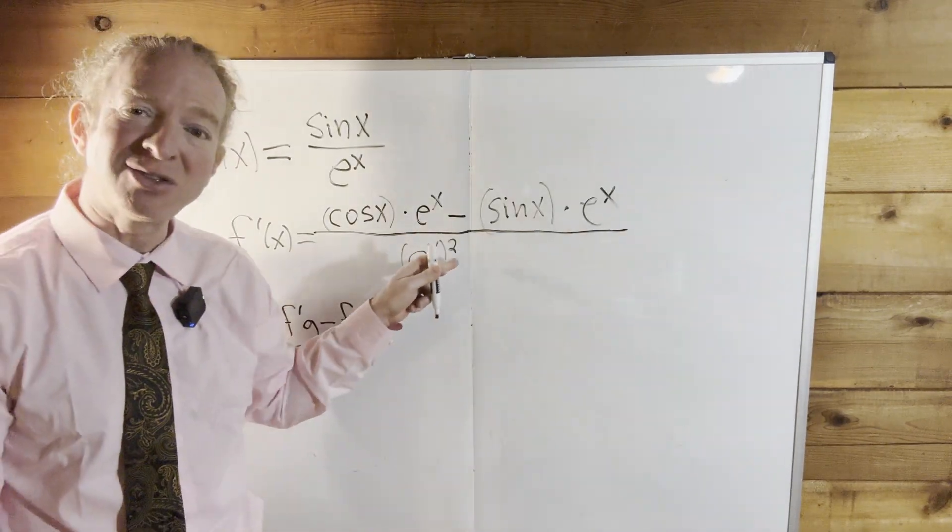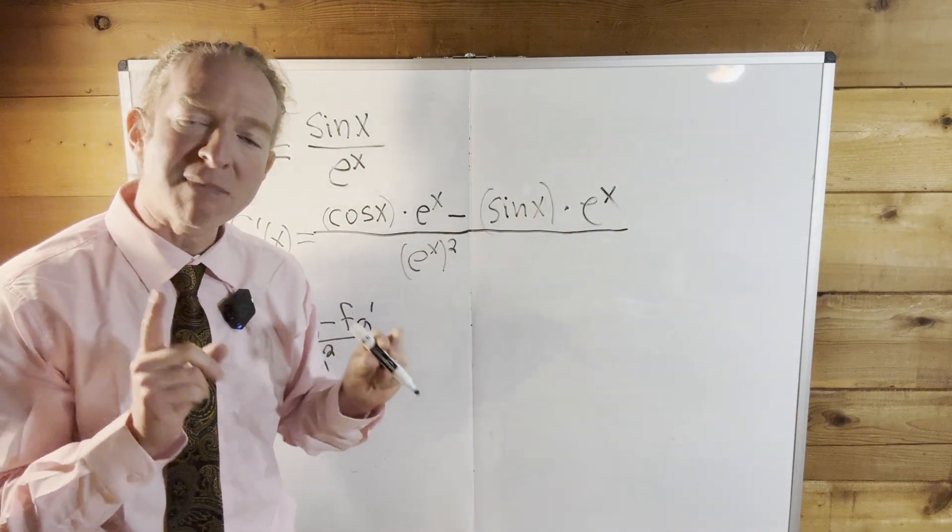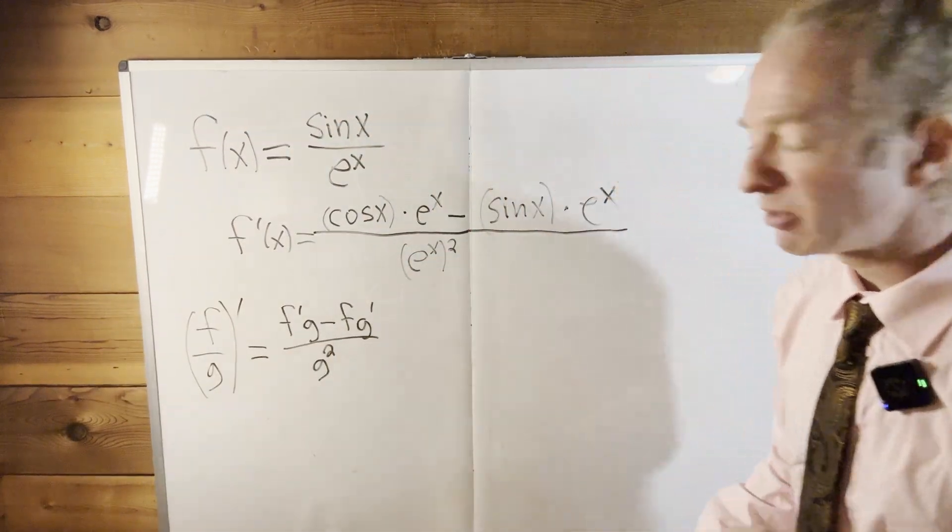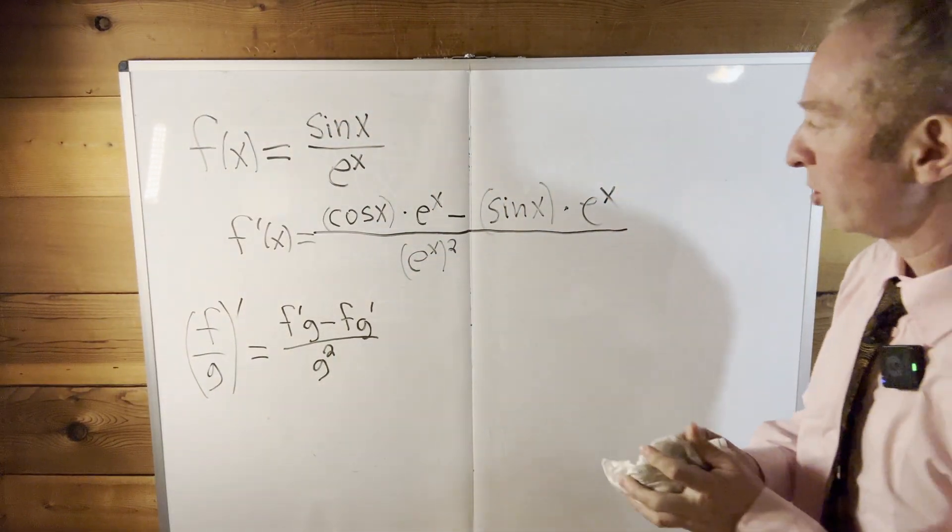You can write this as e to the 2x, by the way, but some magic is going to happen in the next step. So I'm going to erase the quotient rule here.